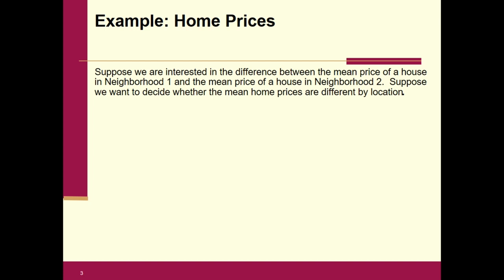In these problems, if we define something as population one and population two, keep it consistent — otherwise you would get the opposite sign. But in real life, you can define it however you want. So population one is neighborhood one, and population two is neighborhood two.